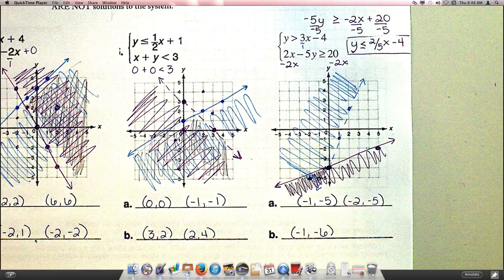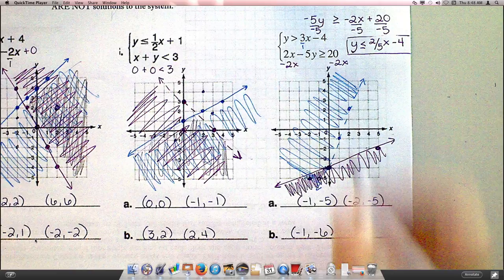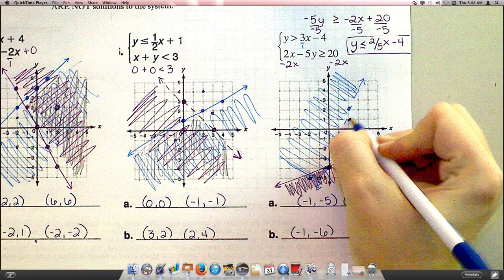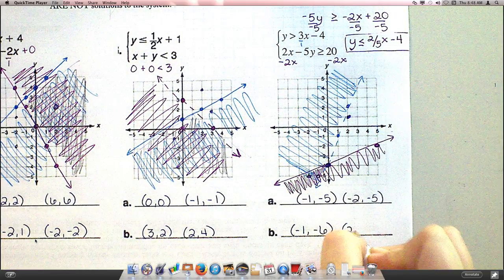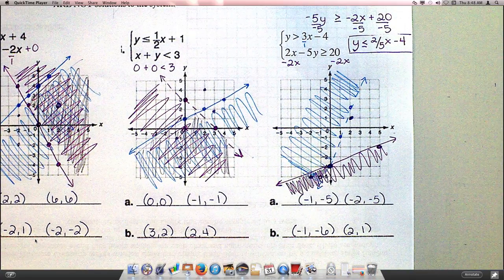And somebody give me one more that's not part of the solution. Isaac? 2, 1. 2, 1. Yeah. That right there. That works. Does that make sense for today?